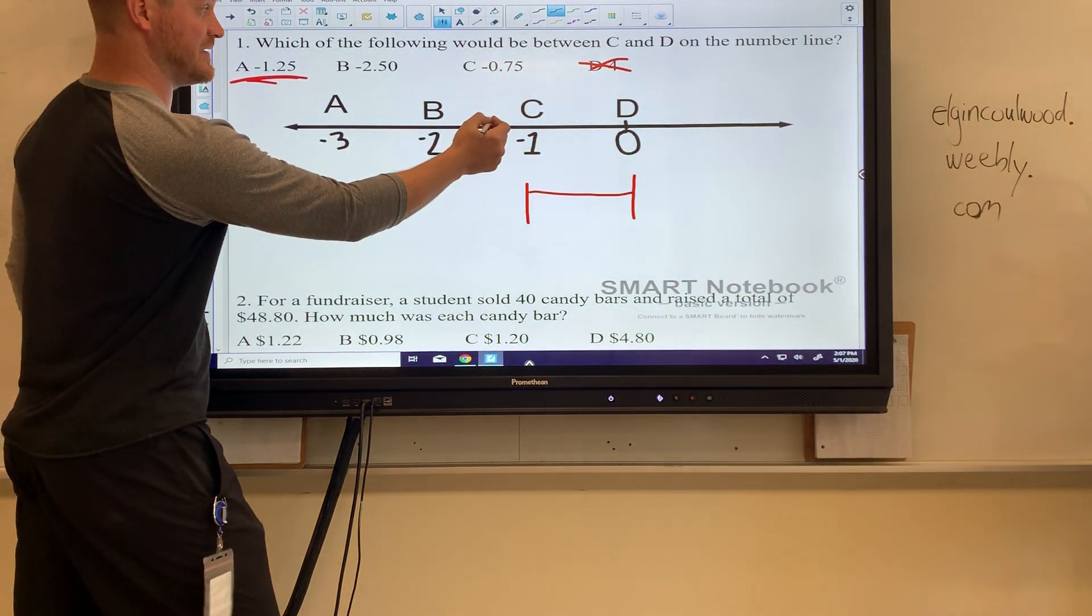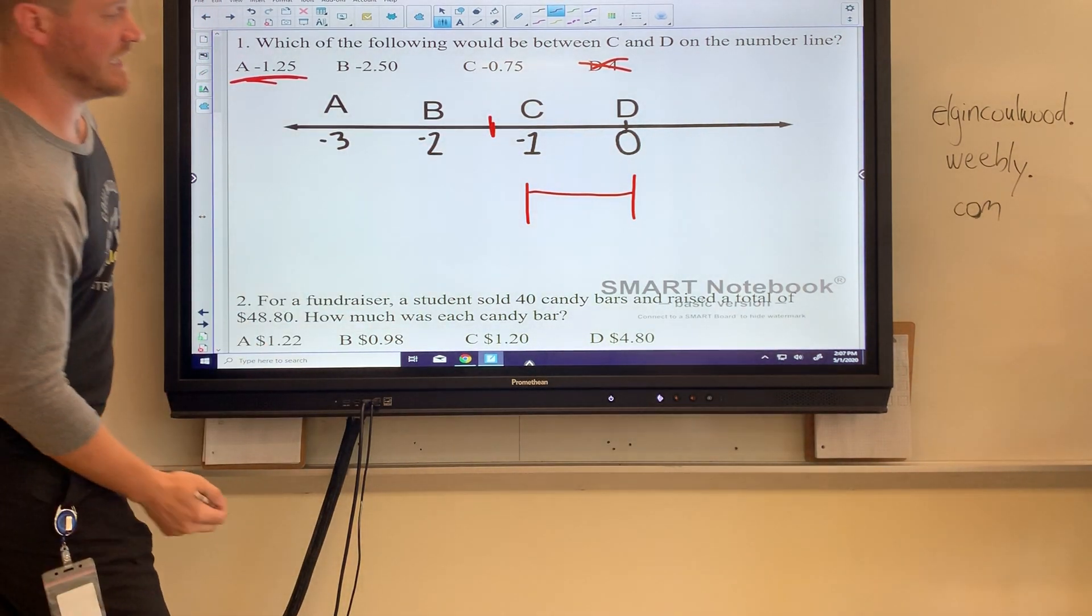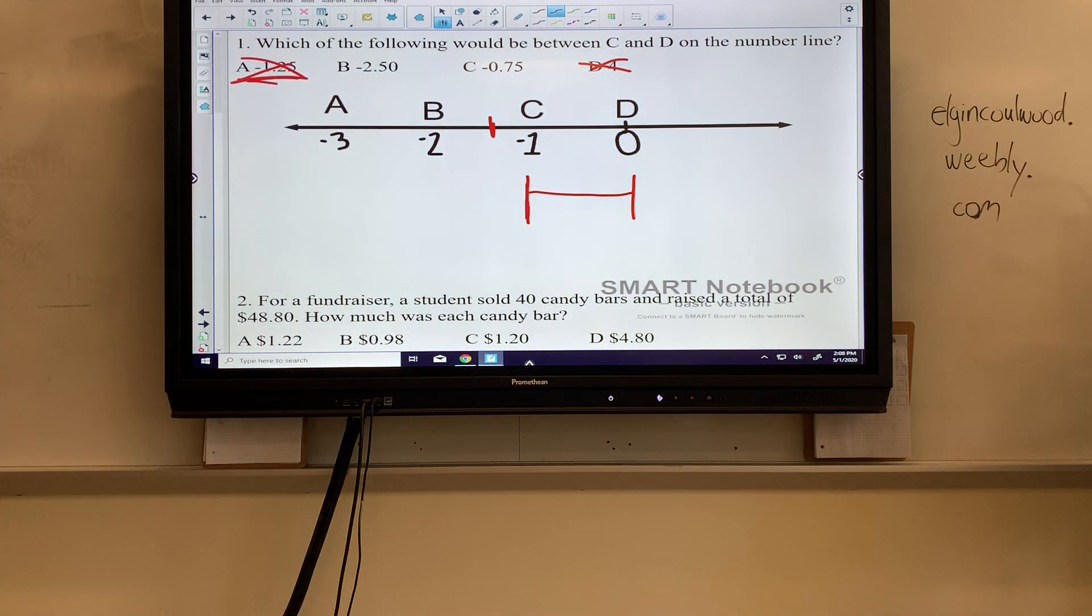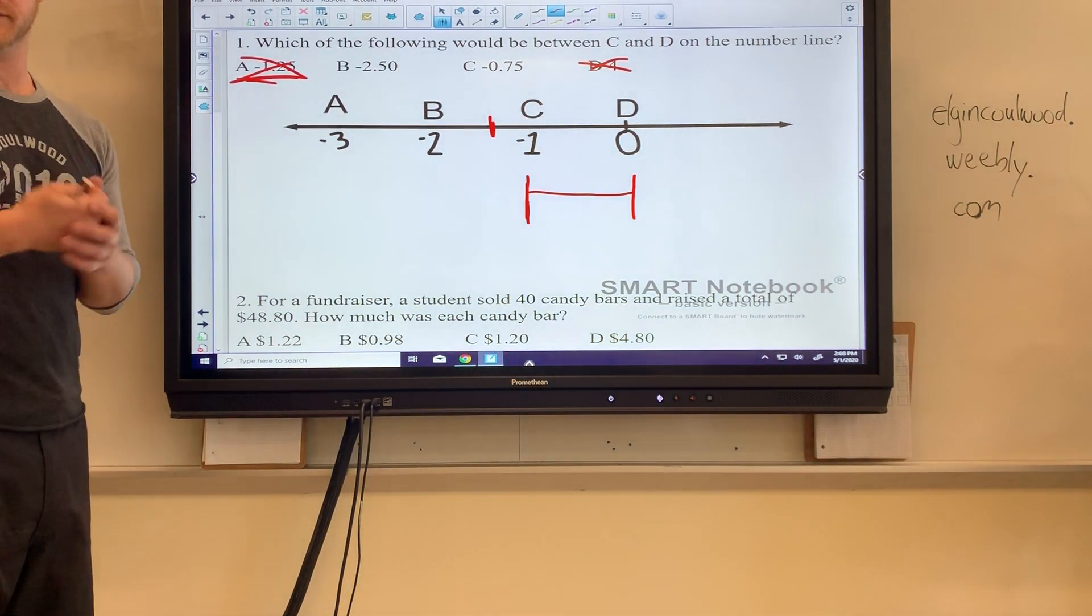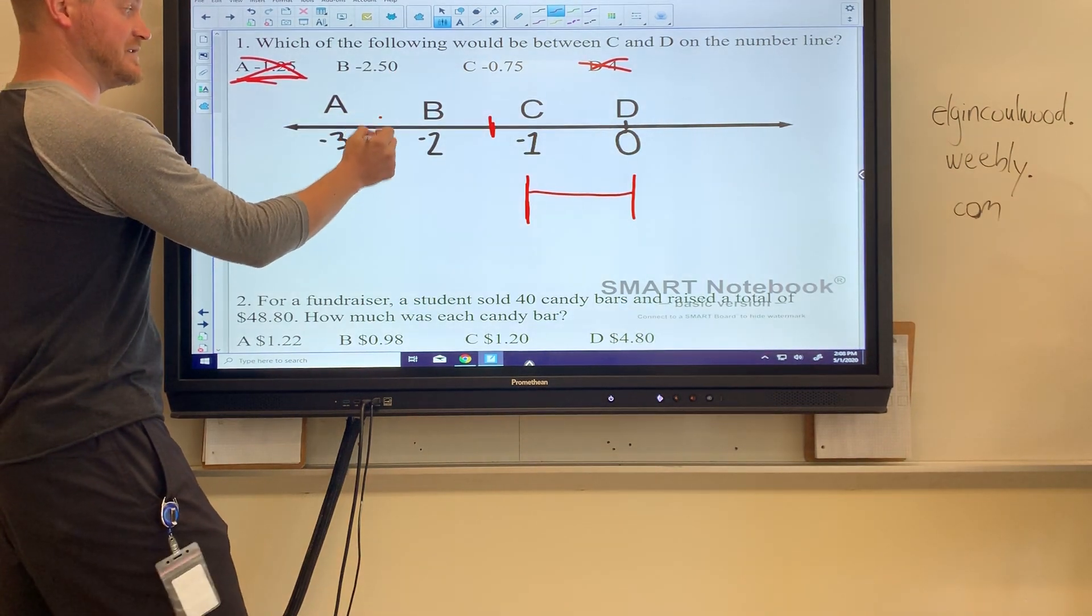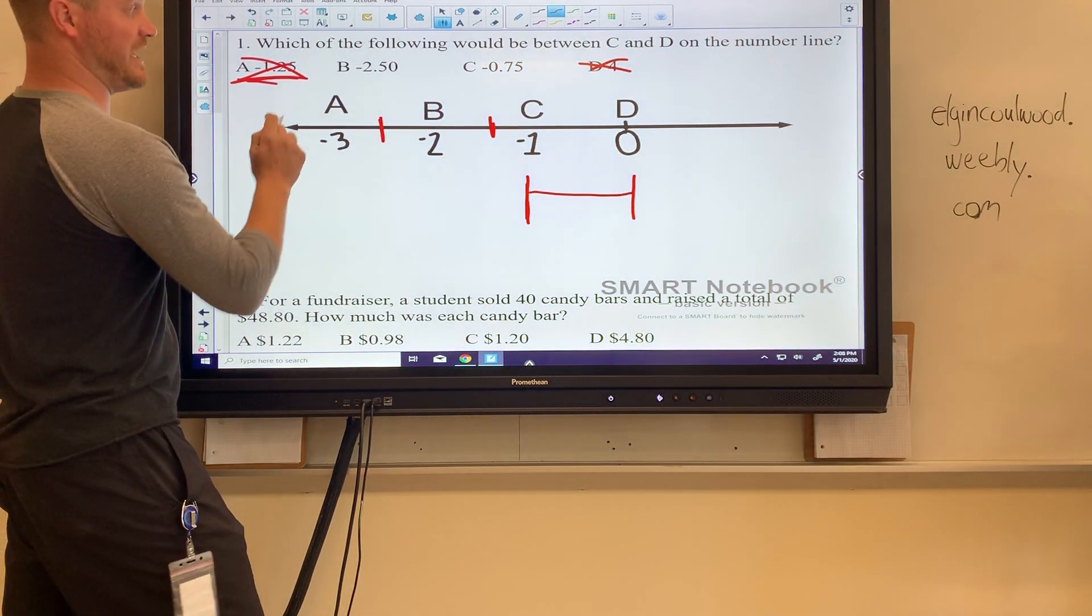So in this case, negative 1.25 is going to be between negative 1 and negative 2, so that's going to be right there. That's a little outside the range that we're looking for, so it's not A. Negative 2.5, just like positive $2.50 is between $2 and $3, negative 2.50 is going to be between negative 2 and 3. That's way over here, that's between A and B. That's not what we're looking for.